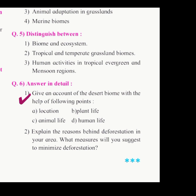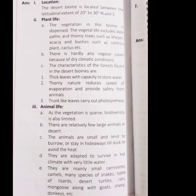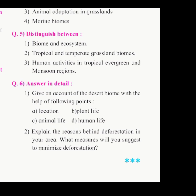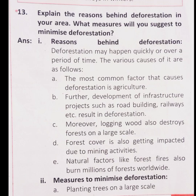Question 6: answer in detail. First: give an account of the desert biomes with the help of the following points — location, plant life, animal life, and human life. Second: explain the reasons behind deforestation in your area. What measures will you suggest to minimize deforestation?